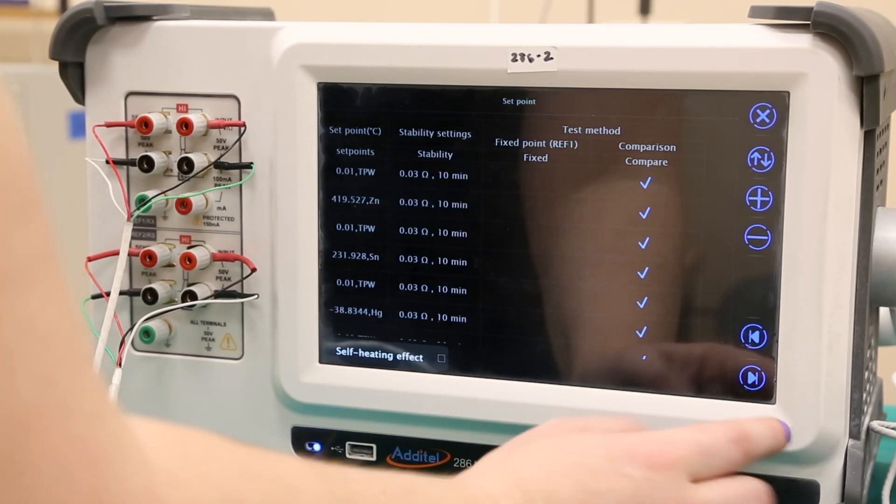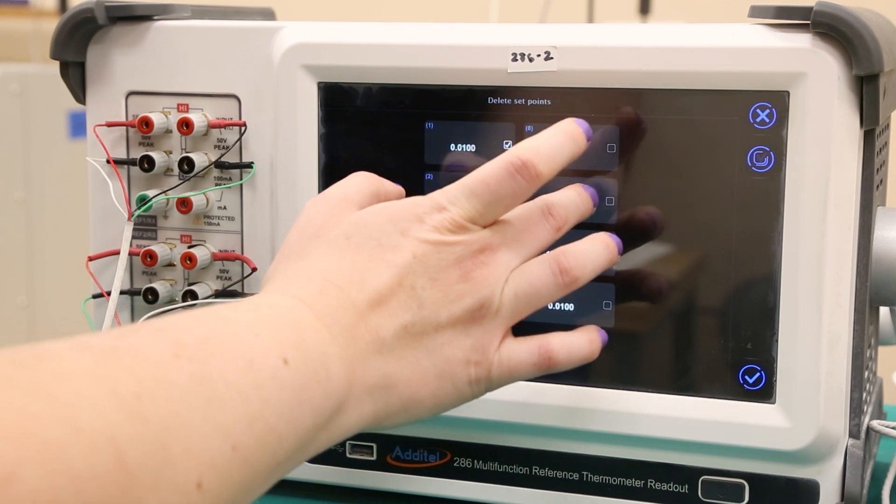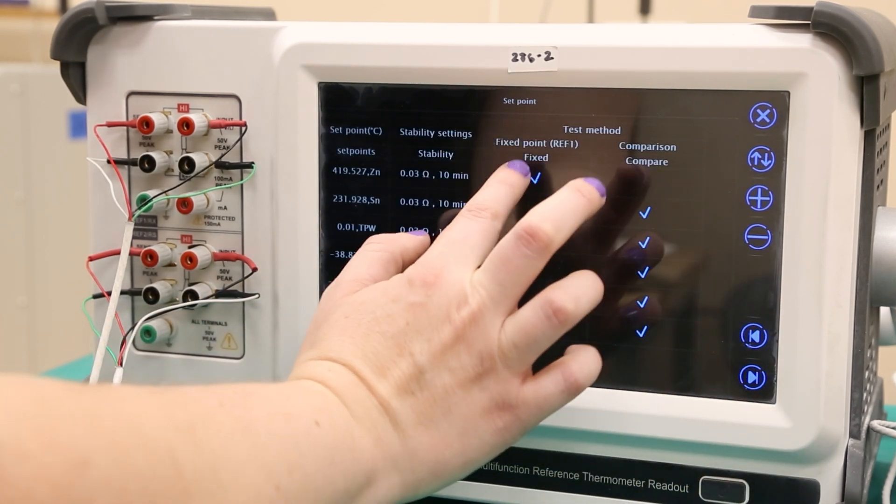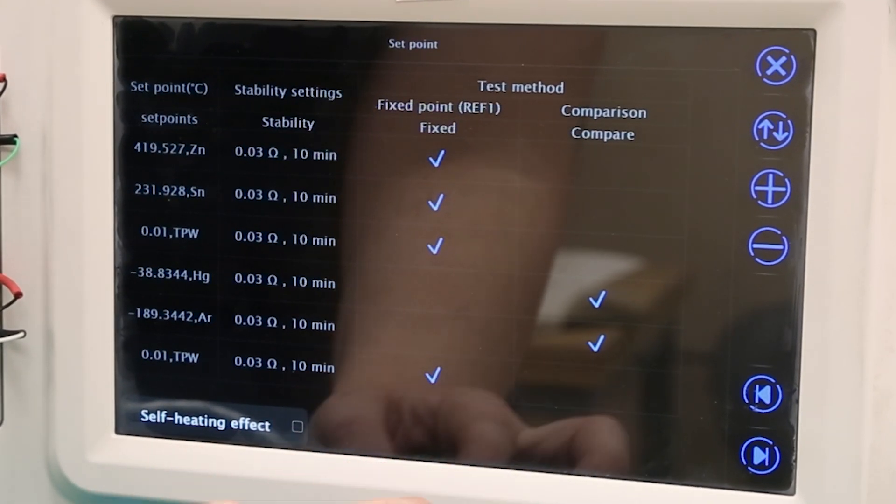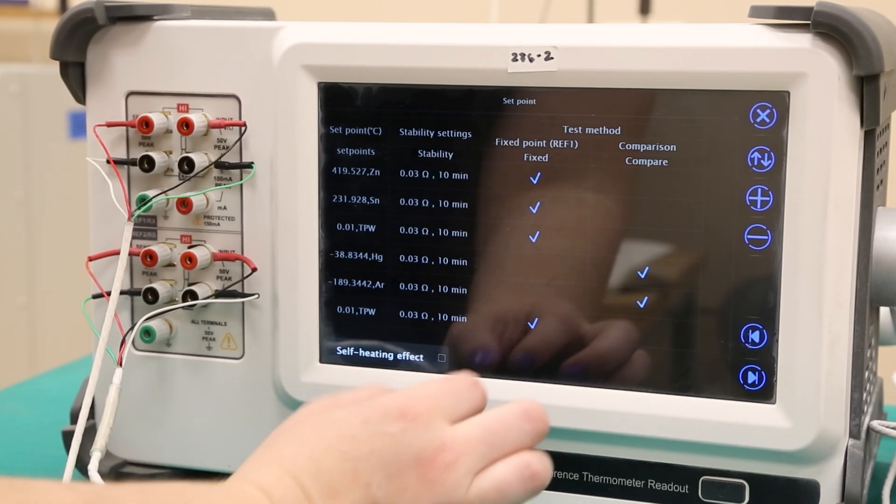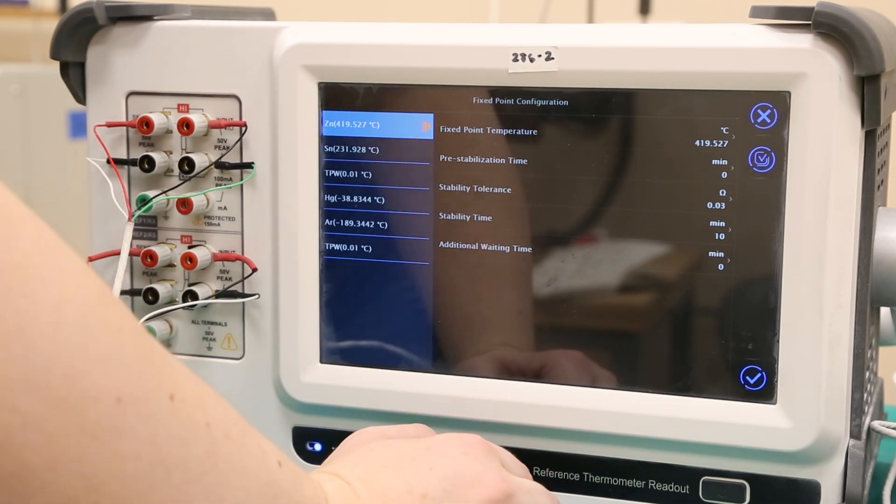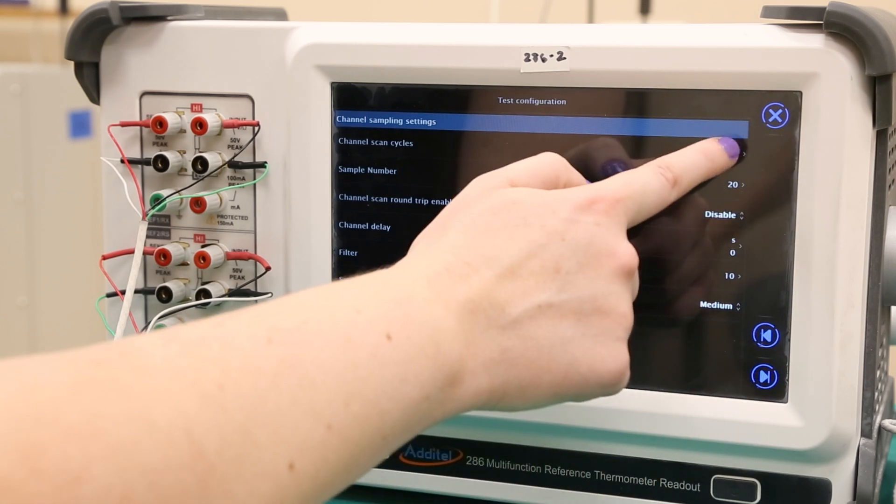Here the test method for each calibration point can be changed and points can be added or removed using the plus or minus keys. We will use fixed point tests for the zinc, tin, and water calibration points and comparison tests for the other two. Specific test settings can be changed here as well by selecting the calibration point you wish to change parameters for. Once each point is configured to your lab standards, press the next key.